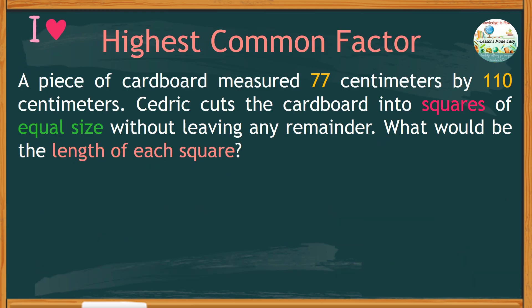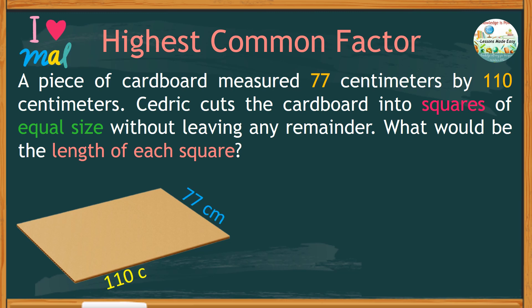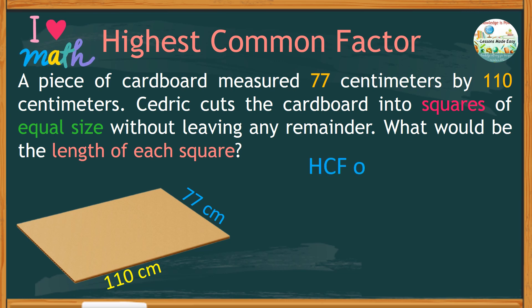To understand the problem better, let's have this illustration. Obviously, the cardboard as described is rectangular, measuring 77 centimeters by 110 centimeters. And if you're going to cut this into squares of equal size, this means we have to find the highest common factor of 77 and 110.